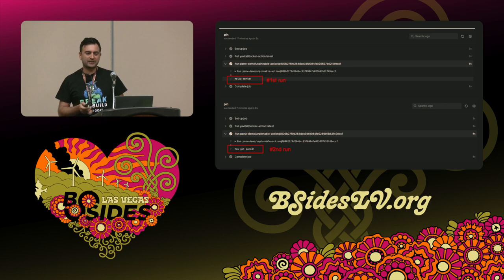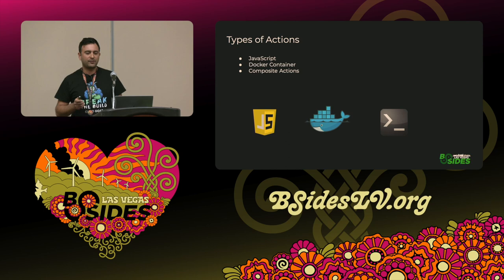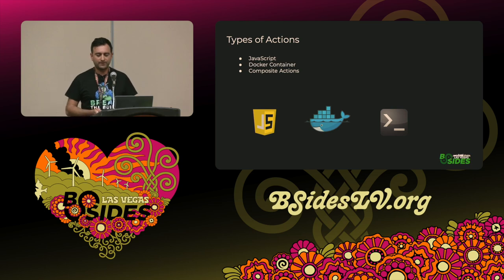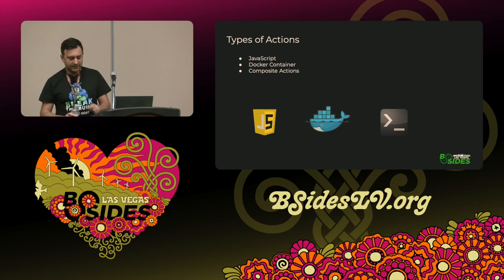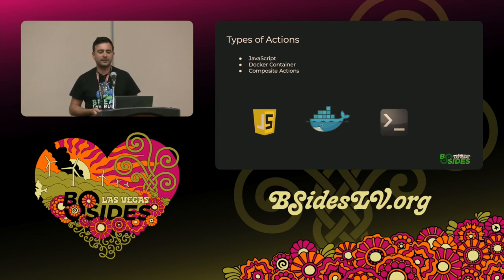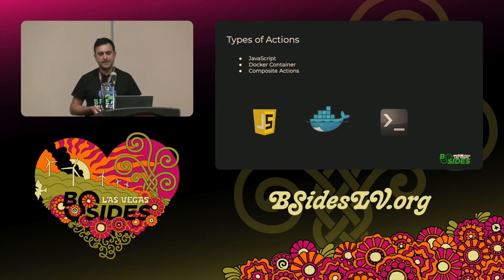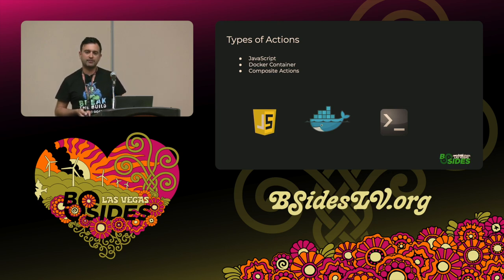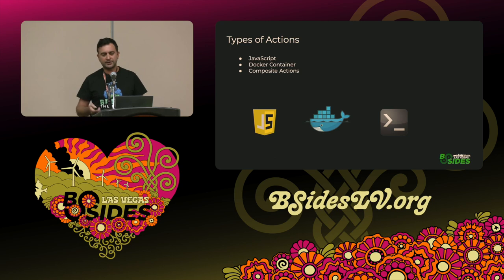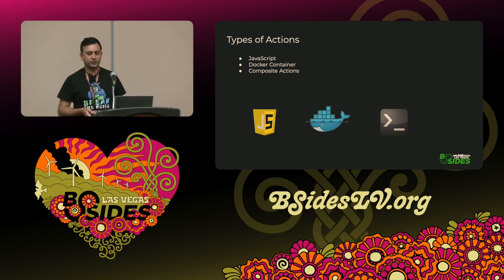I'll teach you the trick in a moment, but first let's do a quick recap on the types of actions. We have three types: the JavaScript action, which allows you to write in JavaScript or TypeScript — very popular, uses the OctoKit client. If you require more heavy lifting — certain operating system or dependencies — you can use the Docker container action. And lastly, we have composite actions, which allow you to write bash inside the YAML file or simply call another action within the YAML file — very good for short operations.